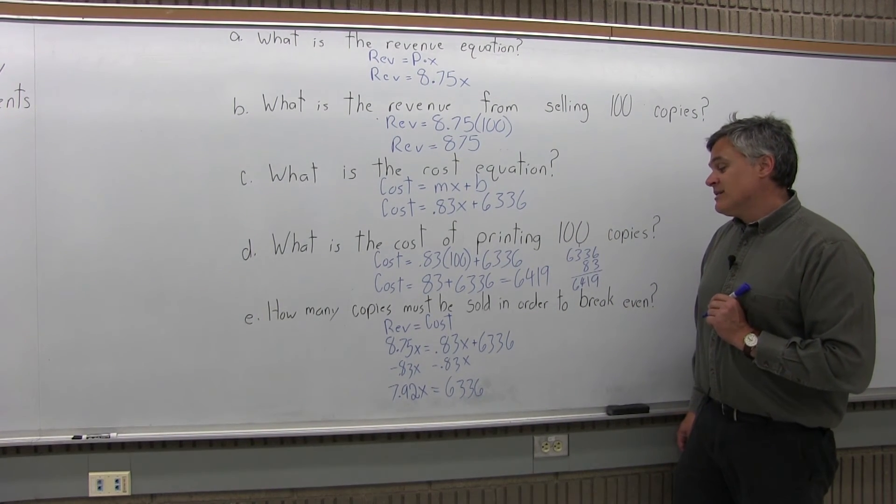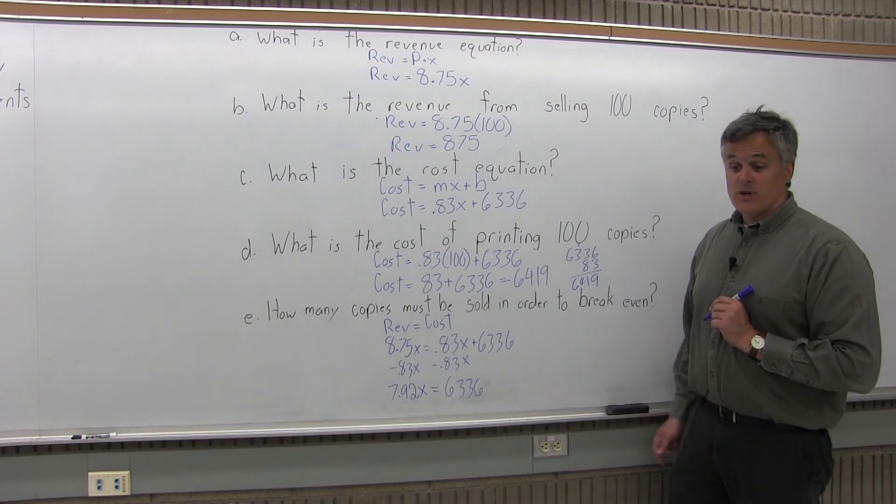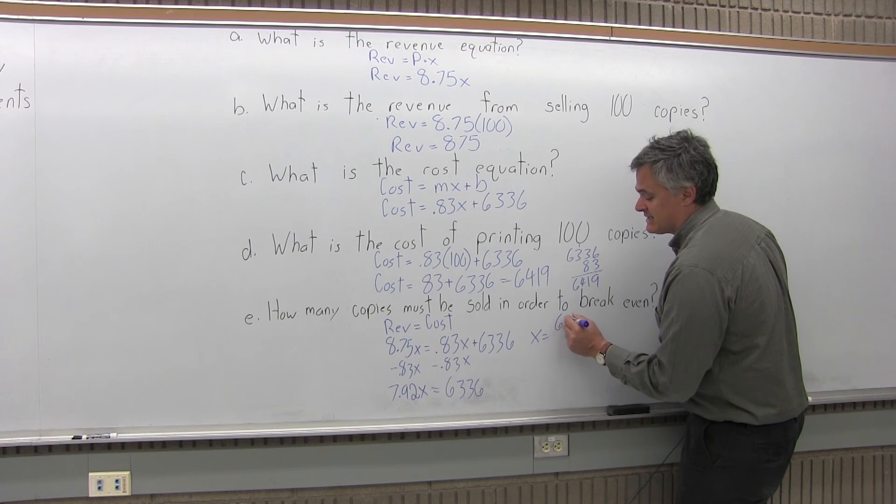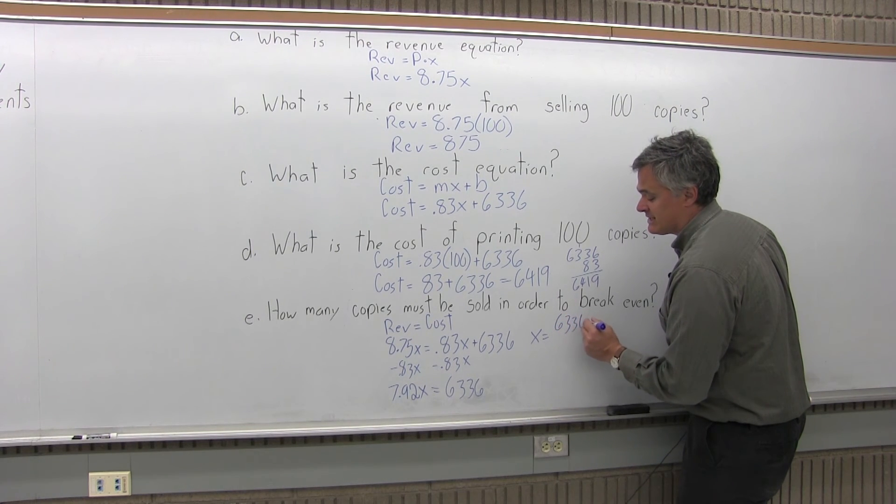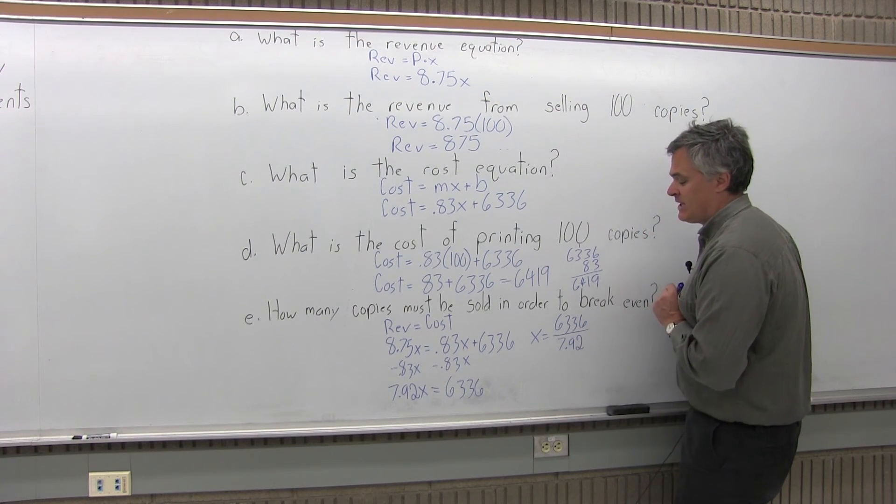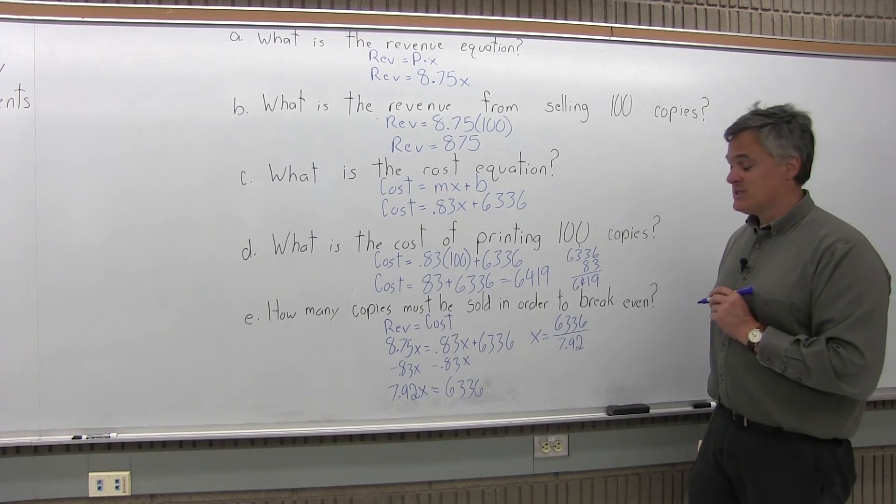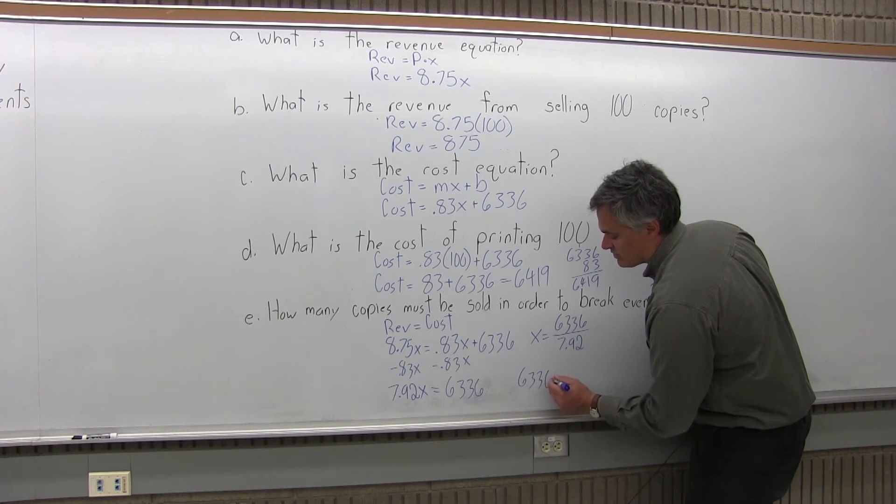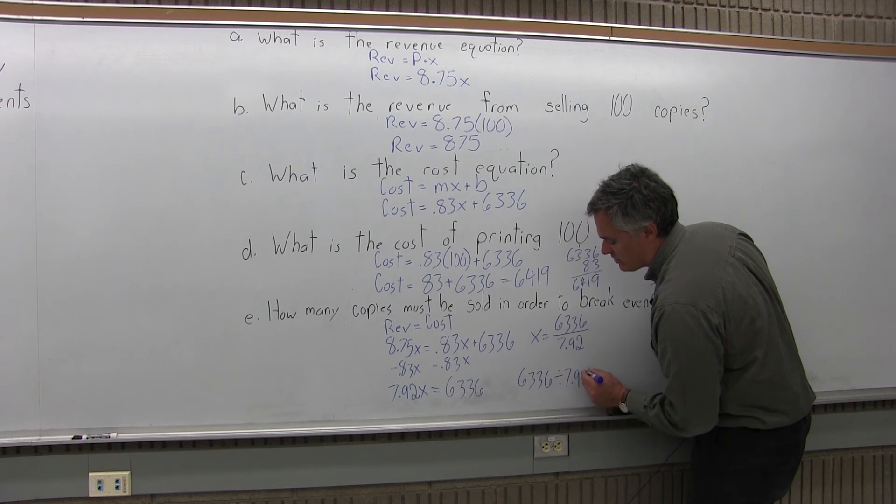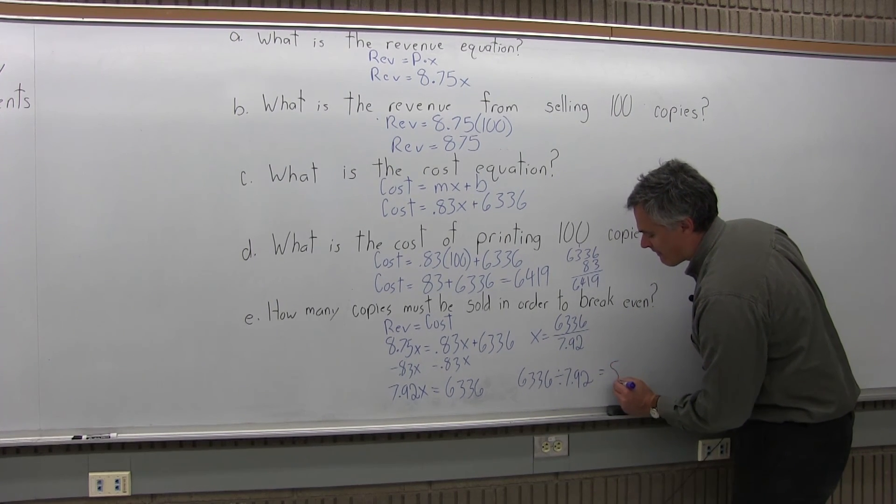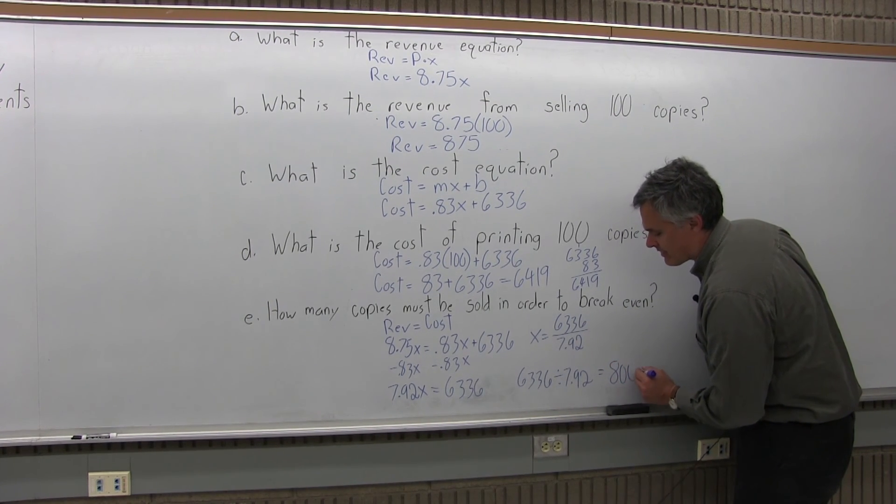To solve for X, I need to divide out the value in front of the X, which is 7.92. So that gives me X equals 6,336 divided by 7.92. With your calculator, you can put in 6,336 divided by 7.92, and it comes out to 800.